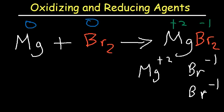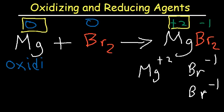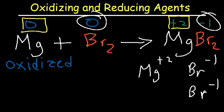For magnesium, the oxidation state increased from 0 to +2. Because the oxidation number went up, oxidation has occurred — magnesium was oxidized. Bromine was reduced; notice that the oxidation number for bromine decreased from 0 to −1, so it was reduced.